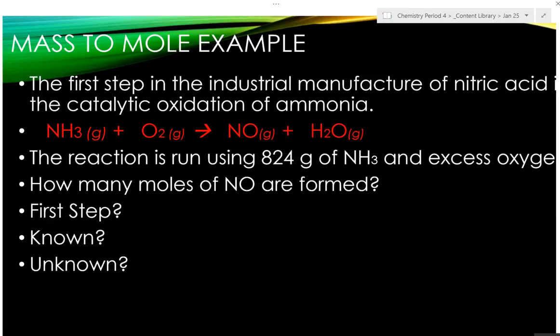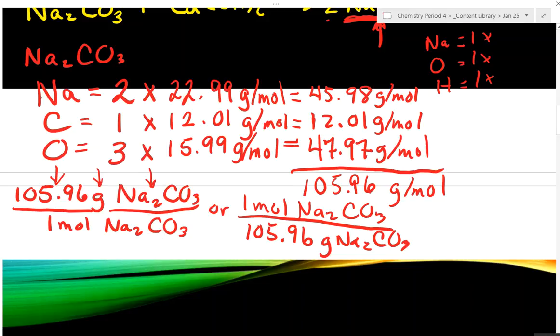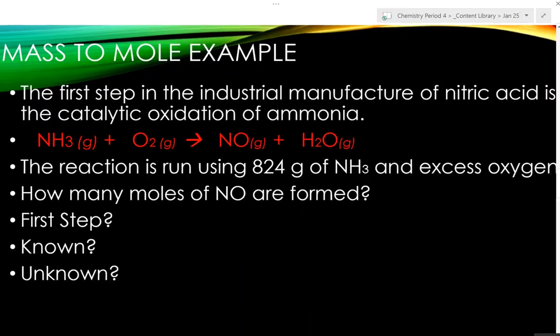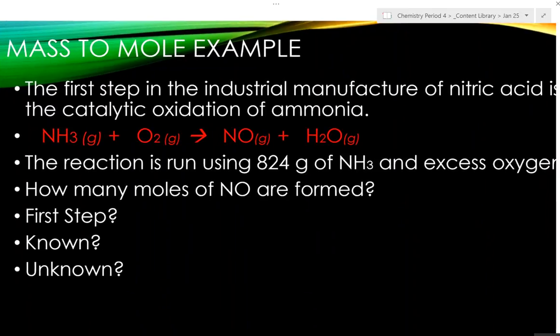The equation for this problem is up there on the board. It says the first step in the industrial manufacture of nitric acid is the catalytic oxidation of ammonia. You add oxygen to ammonia, you get nitrogen monoxide and water coming off. So what's the first thing we have to do? We have to balance the equation.